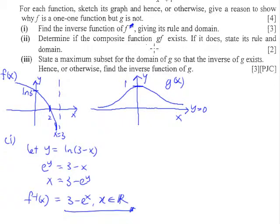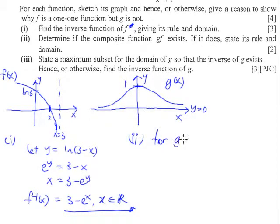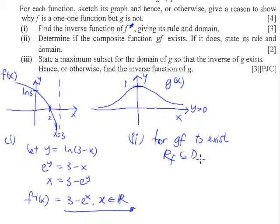Determine if the composite function gf exists. For gf to exist, the range of f must be equal to or a subset of the domain of g. The range of f is from negative infinity to positive infinity, as mentioned earlier.